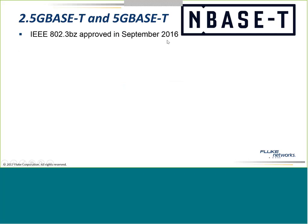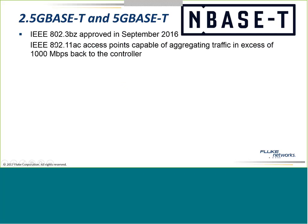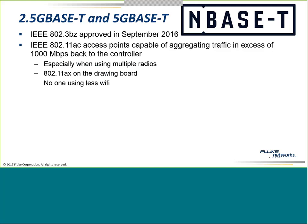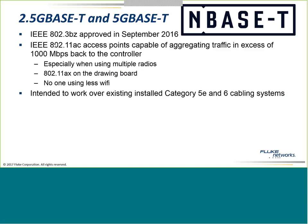Last year, 802.3bz was approved — sometimes referred to as NBase-T. What this allows us to do: we're using more Wi-Fi so that's become the bottleneck, so we want to run 2.5 and 5 gigabits over regular Category 5e and Category 6 cable. Running 5 gig will go up close to 250 MHz. We didn't actually test 5e cabling out to 250 MHz, so there's a standard — the TI-5021 — with limits going out to higher frequencies so you can be assured your cabling will work.